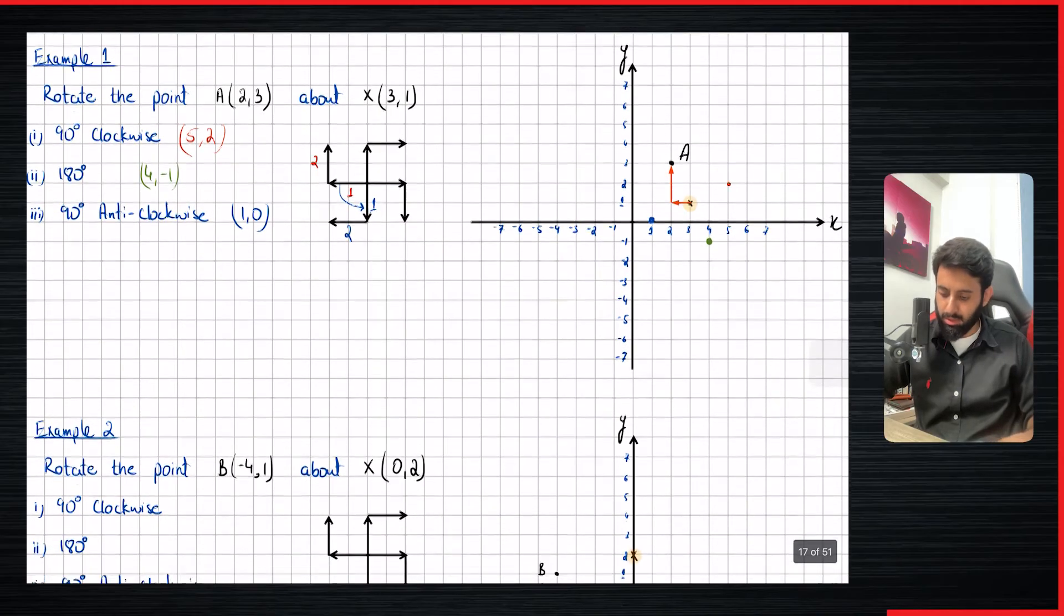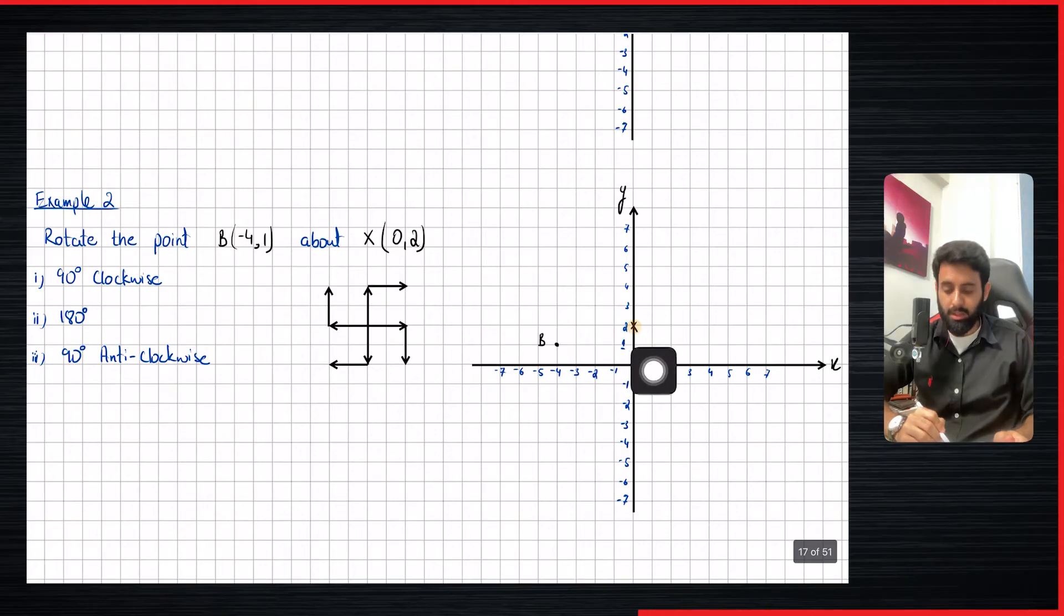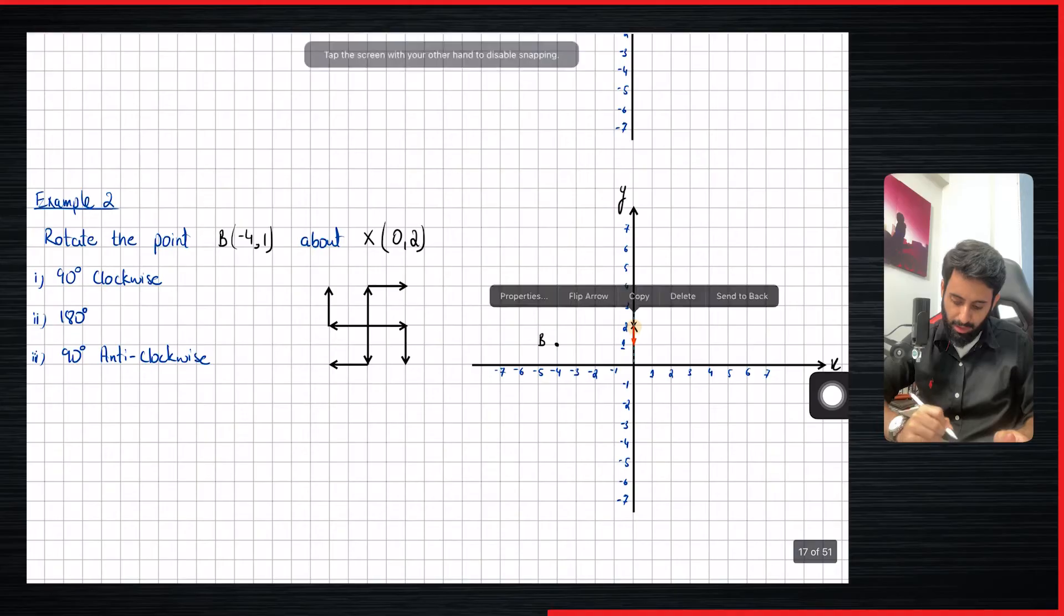So that was one example. Let's do another example over here. So this point is point B, we have to rotate, which has coordinates for minus four comma one, and the center is zero comma two, the center is on the y axis. So let's track our point that we have to rotate from the center.